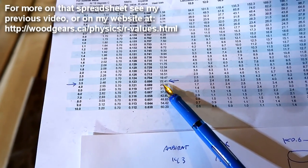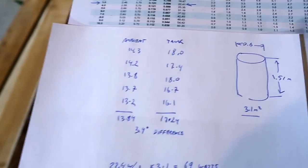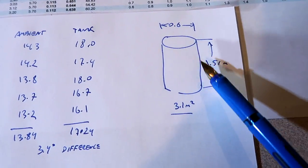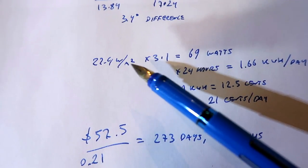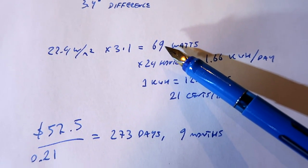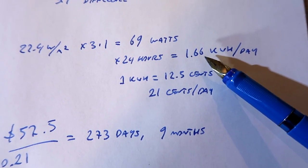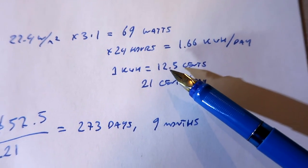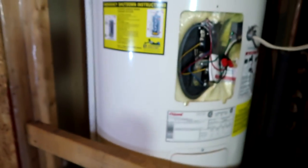That comes out to about 22.4 watts heat loss per square meter, and I worked out the tank's top and side surface area is 3.1 square meters. Multiplying that together, we're losing about 69 watts on that tank constantly, or about 1.66 kilowatt hours per day, and at 12.5 cents per kilowatt hour, we're using 21 cents per day of energy leaking through the tank walls.